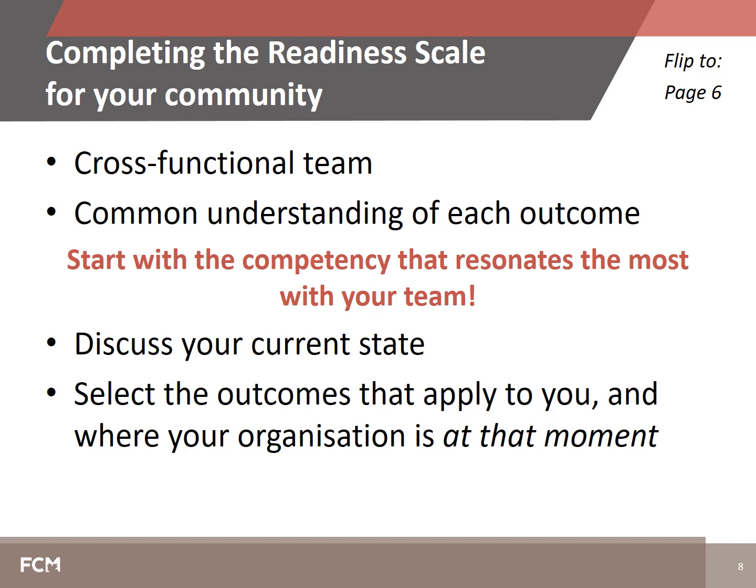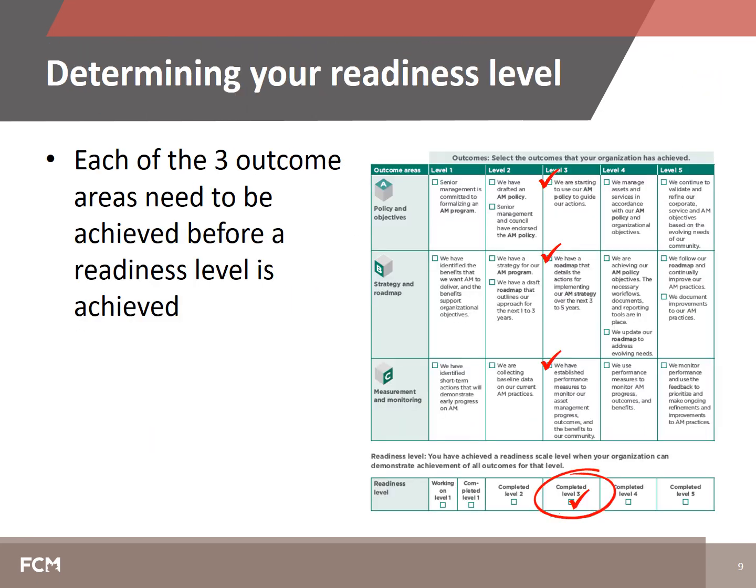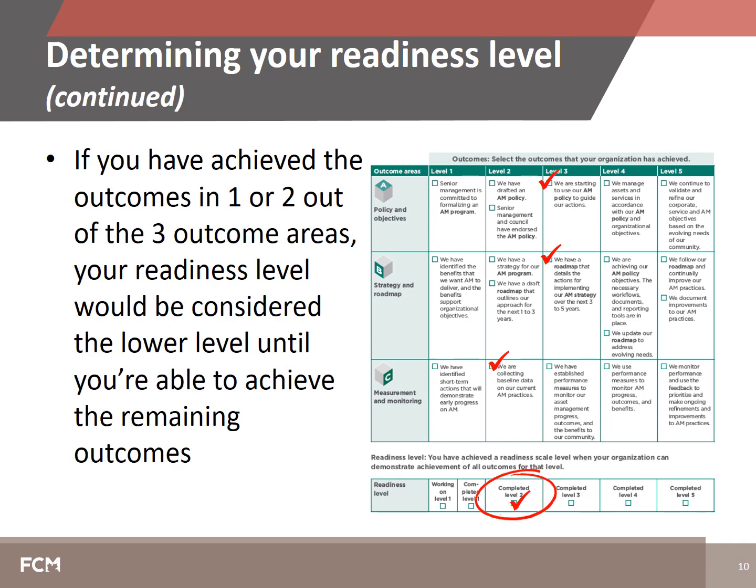You will use the outcomes that you have selected to determine your overall readiness level for each competency. It is important to note that in order to be at any readiness level in a competency, you need to have achieved each of the three outcome areas for that level. However, if you have achieved level three outcomes in one or two of the outcome areas and a level two outcome in the remaining outcome area, you would assess your readiness level as the lower of the two levels — in other words, the level at which your municipality has achieved all of the outcomes.